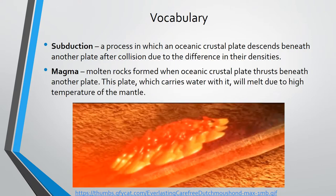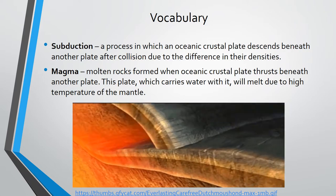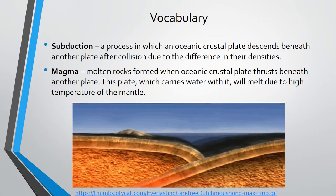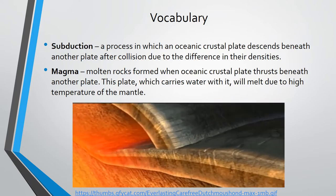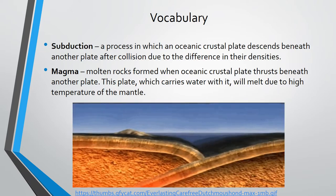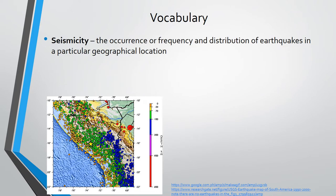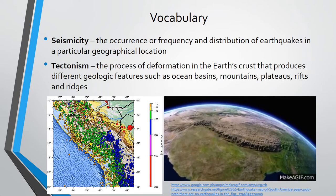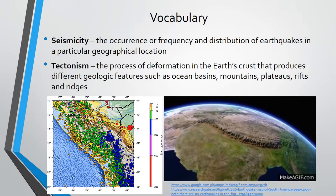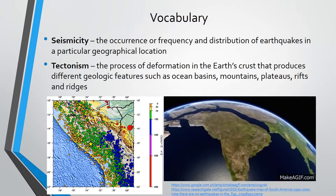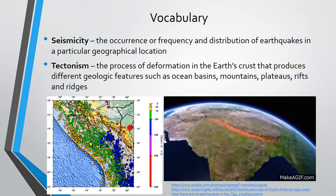Magma: molten rocks formed when an oceanic crustal plate thrusts beneath another plate. This plate, which carries water with it, will melt due to the high temperature of the mantle. Seismicity: the occurrence, frequency, and distribution of earthquakes in a particular geographical location. Tectonism: the process of deformation in the earth's crust that produces different geologic features such as ocean basins, mountains, plateaus, rifts, and ridges.